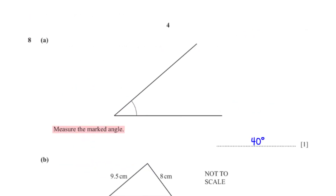Measure the marked angle using a protractor. When we measure the angle we get 40 degrees.